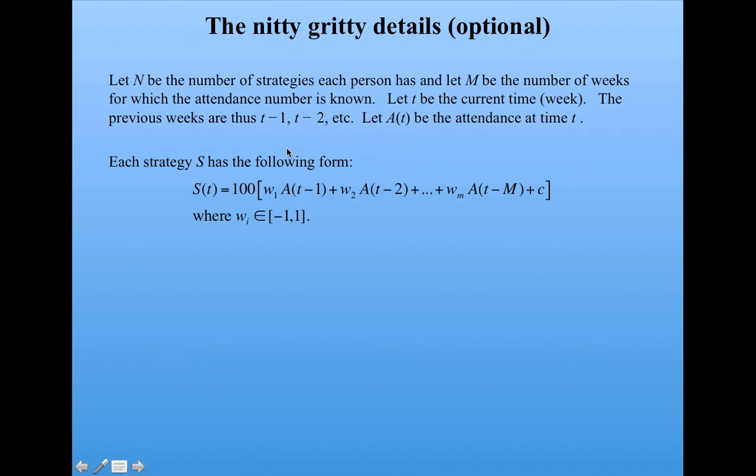Each strategy is going to look like this. A strategy predicting the attendance for week T is going to be 100 times a sum, where the sum is some weight W times the attendance at the previous week, plus some other constant times the attendance at the week before that, etc., all the way up to the memory limit, plus some other constant. So this is a very general linear combination of previous weeks times 100. And these weights W sub i are in the interval minus 1 to 1.